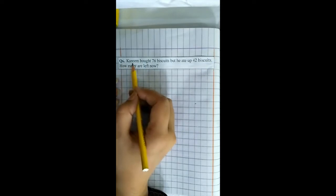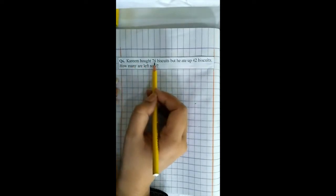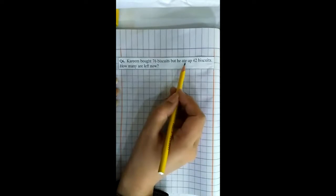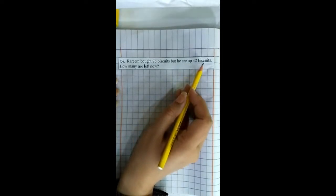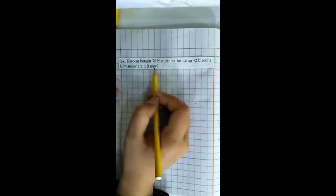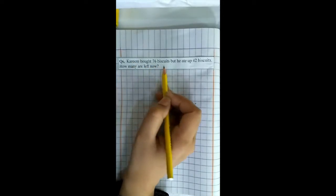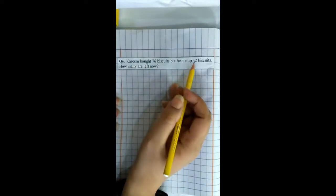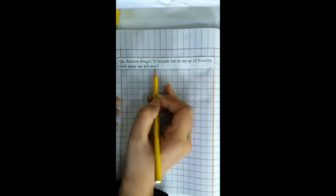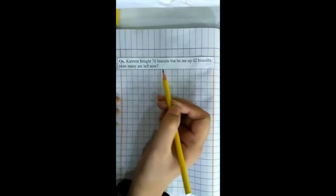Question number 6. Kareem bought 76 biscuits but he ate up 42 biscuits. How many are left now? Kareem نے 76 biscuits خریدے. لیکن اس نے 42 biscuits کھائے. How many are left now? اس کے پاس باقی کتنے رہ گئے?